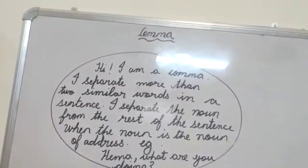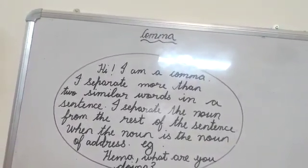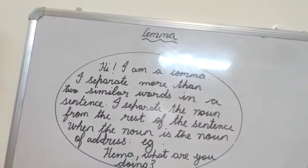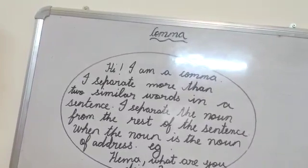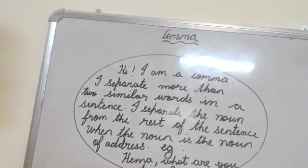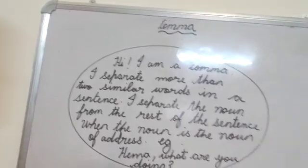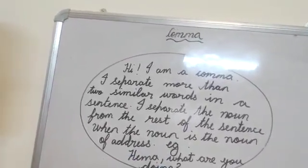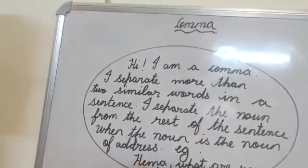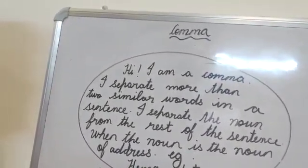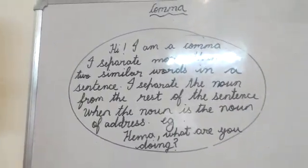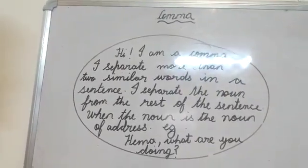A comma is used to separate more than two similar words in a sentence. A comma also separates the noun from the rest of the sentence when the noun is the noun of address. Hema is a noun and the noun of address — someone is talking to, and addressing, Hema.